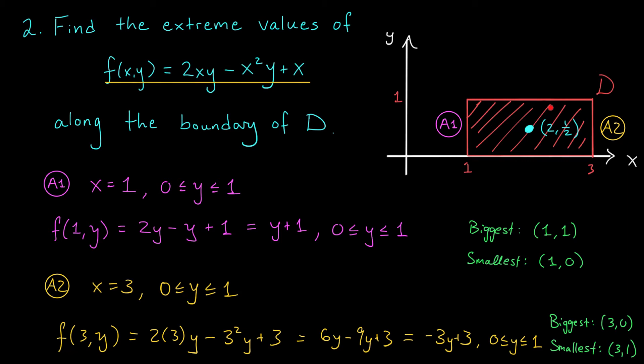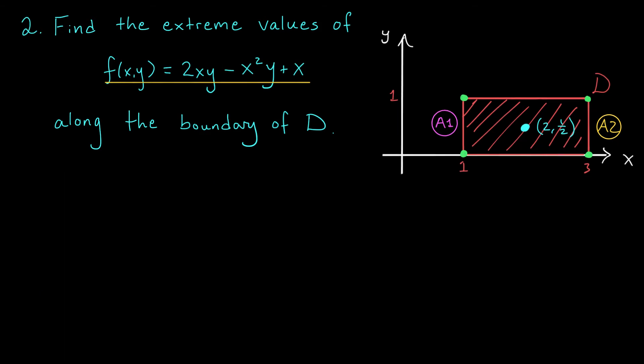So in addition to our critical point (2, 1/2), we've found four candidates for the location of a global max or global min. I've labeled them here. Of course, we still have two line segments left to check. Okay, we'll now examine our function along this horizontal line segment, which maybe we'll call A3. A3 is the x-axis. The equation is y = 0. But of course, we're not considering the whole x-axis, just a small portion of it for x values between 1 and 3. What's our function doing along this segment? Well, to find out, we're going to plug in 0 for y. When we do this, the first two terms of our function go away, and we're simply left with x, where x ranges between 1 and 3. This is going to be largest when x is as big as possible, so we get an extreme point at (3,0). It's going to be smallest when x is as small as possible, and we get an extreme point of (1,0).